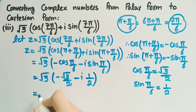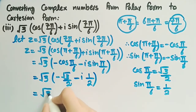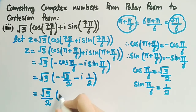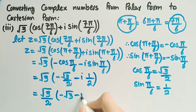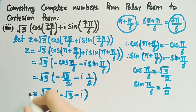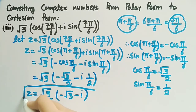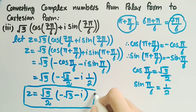Taking 1/2 common, z = (√3/2)(-√3 - i). This is the required cartesian form of the complex number given in polar form for example 3.